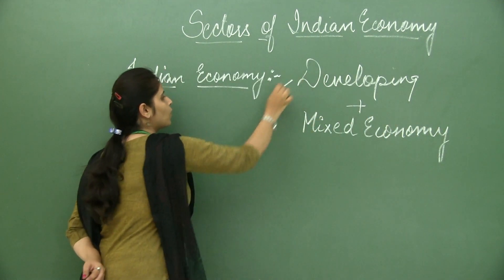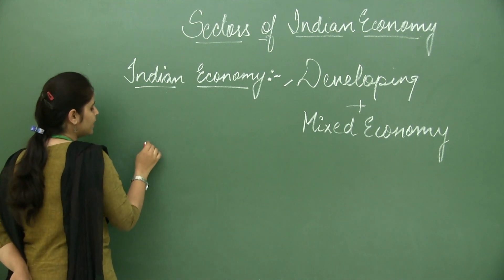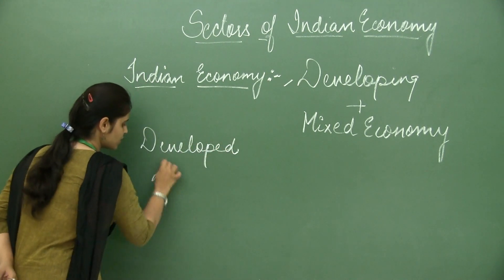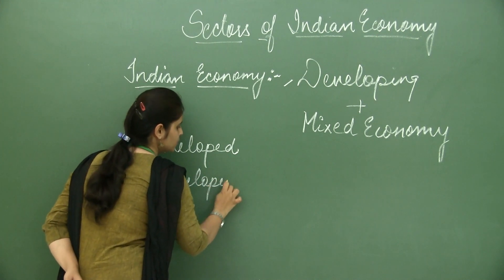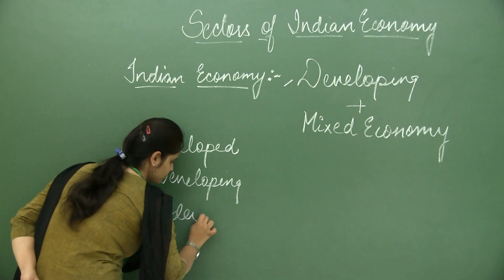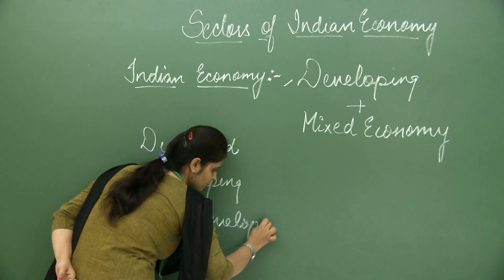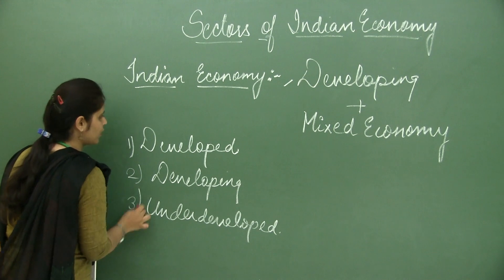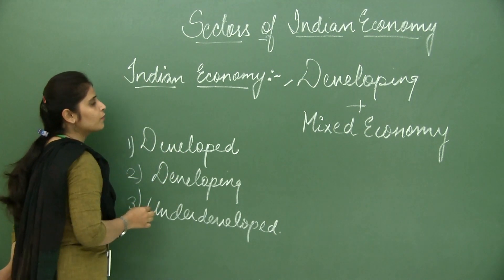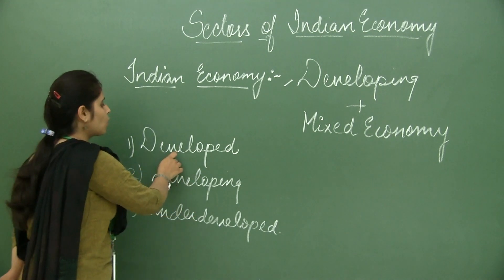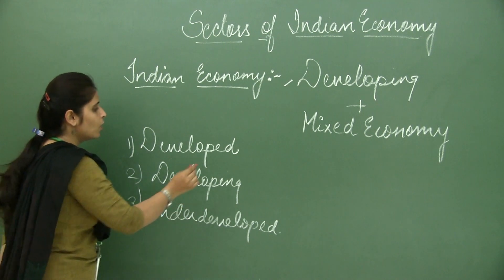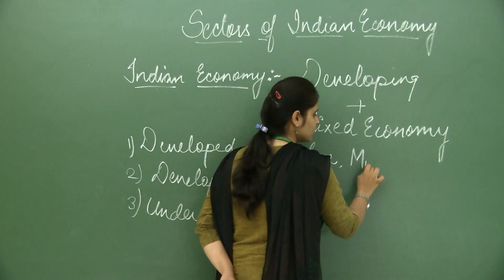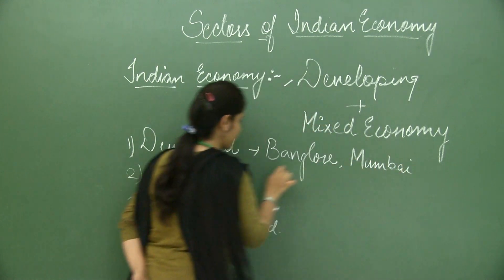Let me tell you why we call it developing. There are three types of nations: first is developed, second stage is developing, and the third is underdeveloped. Let me relate these three with an example. When we talk of different states in India, we talk of three types — developed, developing, and underdeveloped. For example, Bangalore or metropolitan cities like Mumbai come in the category of developed.